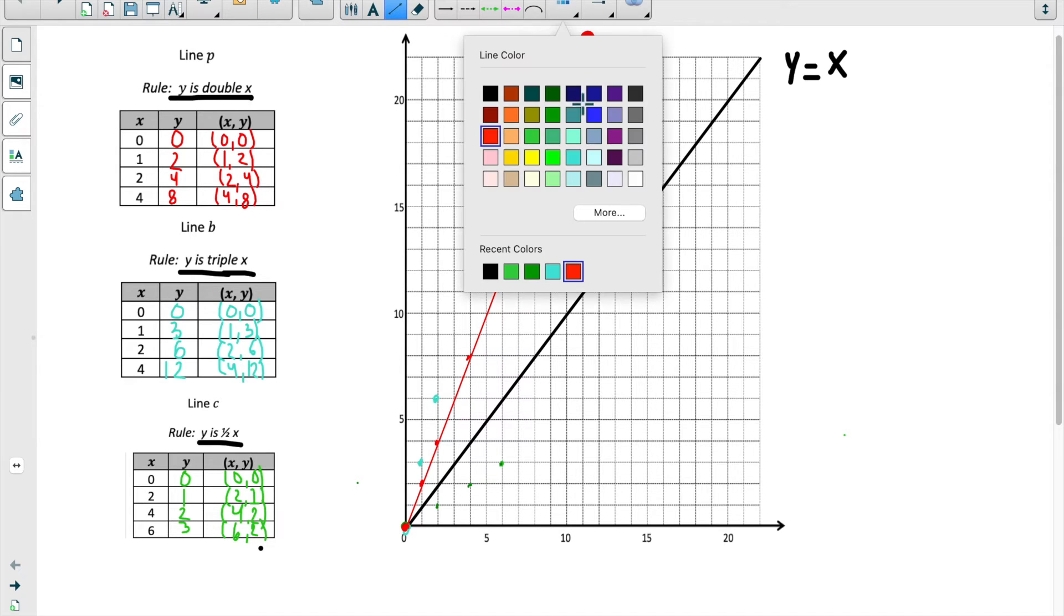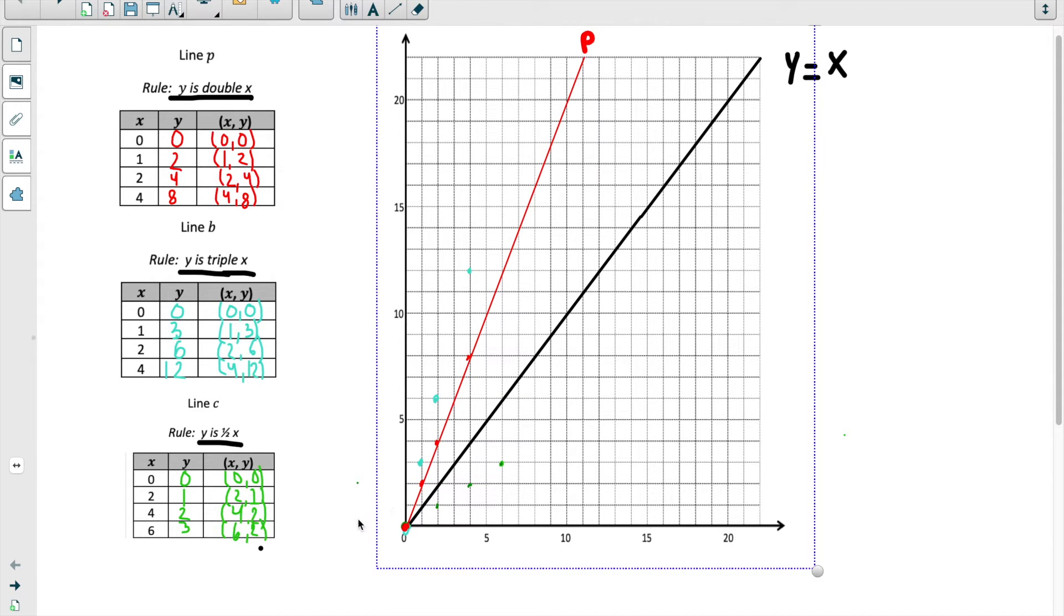Now I'm going to draw line b, where the rule is y is triple x. Watch what happens, see what you notice. So I'm connecting these points, and I'm going to continue it on. And I'm going to label this line b. I want you to pause here and think about what do you notice in terms of the steepness in lines b versus line p.